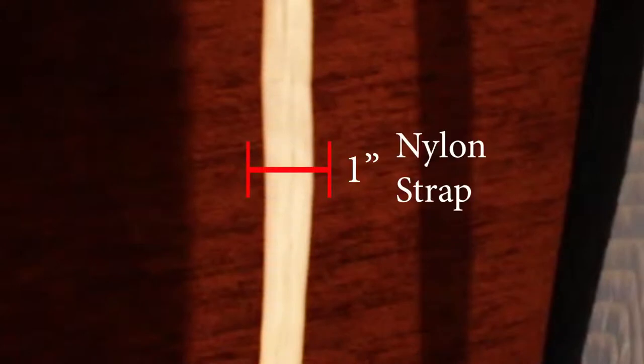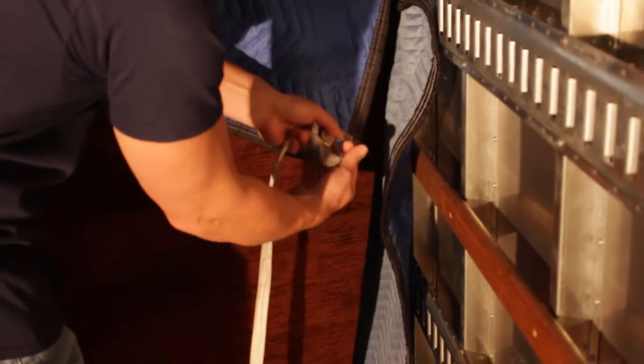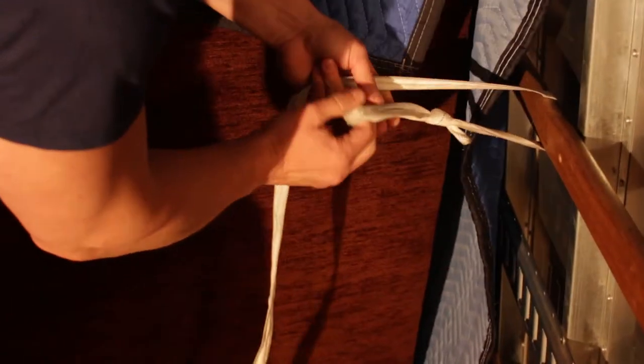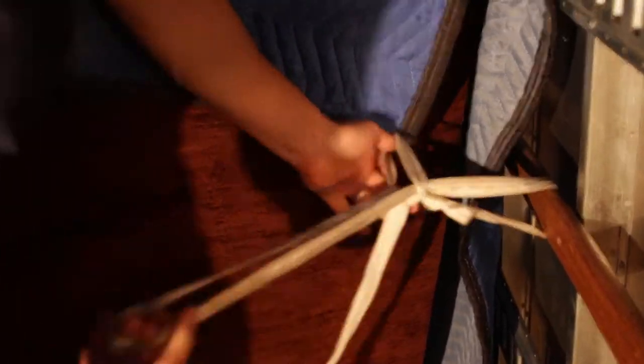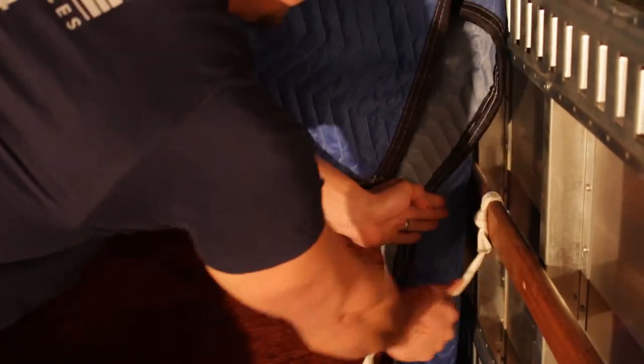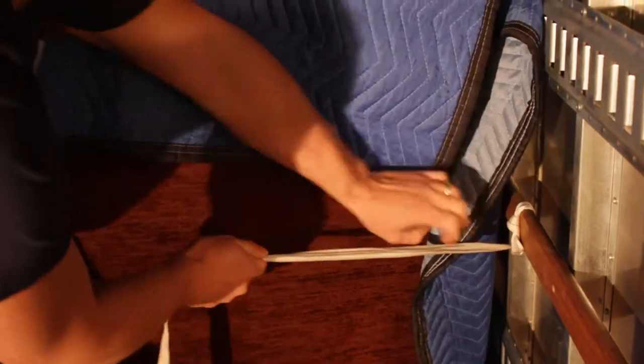Here at House to Home Moving, we use one inch nylon strap. First, place the already looped end around the slat of the truck. Pull excess strap through the loop and tighten, ensuring that only blankets touch the strap.